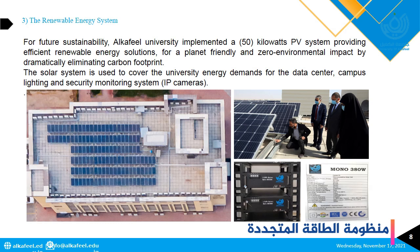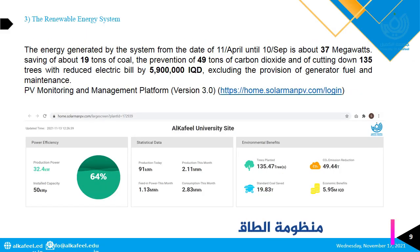As you can see from the university logos on all the devices, the system is specially designed for the University of Al-Kafil. Here are some statistics from the online monitoring system: in a five-month period, the system produced 37 megawatts, saving 19 tons of coal and preventing 49 tons of CO2. The system also prevented the cutting down of 135 trees and reduced the university electricity bill by roughly 6 million Iraqi dinars.